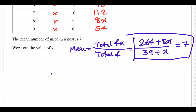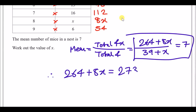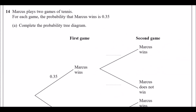To clear the fraction, multiply (39 + x) across: 264 + 8x = 7 times (39 + x), which gives 273 + 7x. Moving all x terms to the left and number terms to the right — subtracting 7x gives 1x, then subtracting 264 gives 9 — so x equals 9.